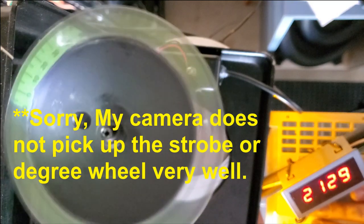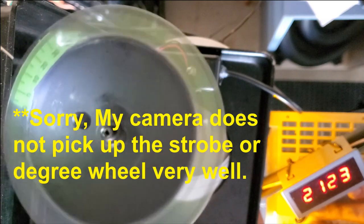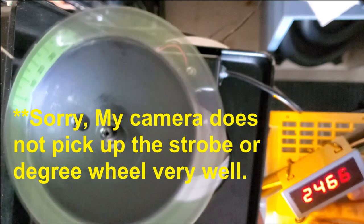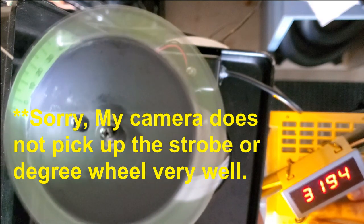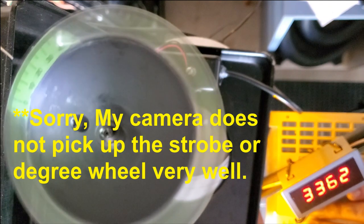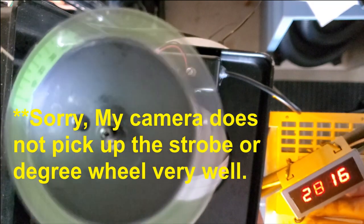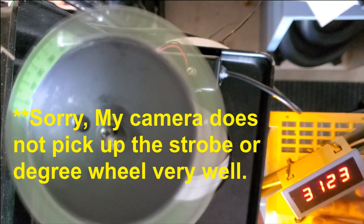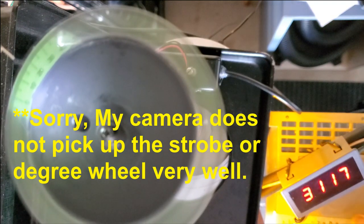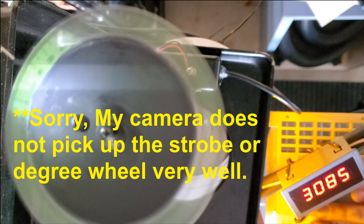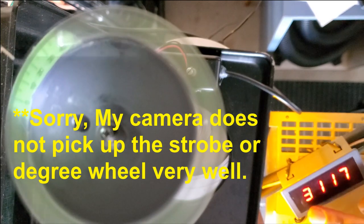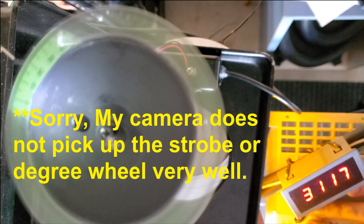This is 13 degrees at 2125. Full advance at 3,100 RPMs distributor speed. So that's 6,000 RPMs is when this distributor achieves full advance.